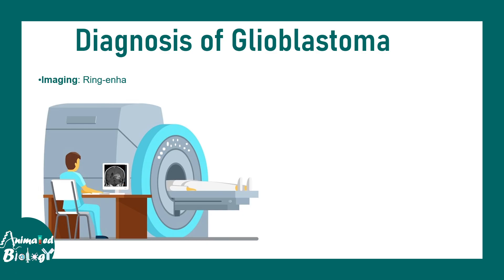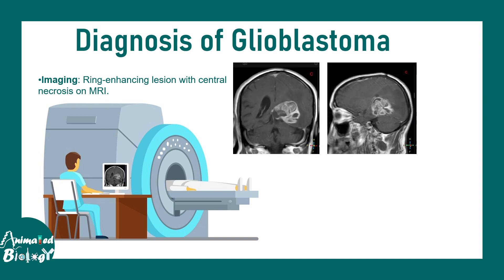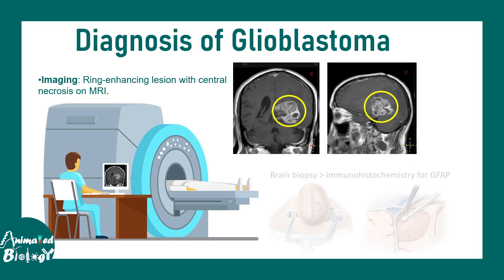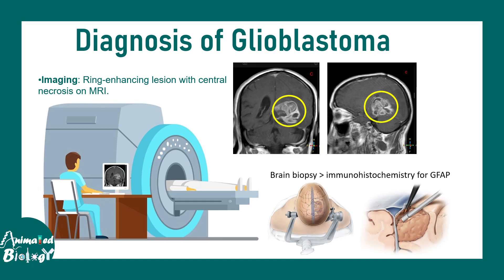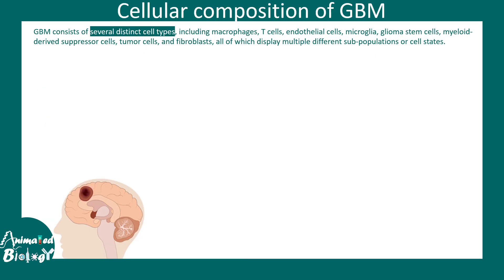When it comes to diagnosis, it can best be diagnosed using MRI. A ring-enhancing lesion with central necrosis is a key and prominent feature of glioblastoma on MRI images. Here you can see an MRI image showing the ring-enhancing lesion and the central necrotic core. Brain biopsy followed by immunohistochemistry for GFAP is another way of testing for glioblastoma.